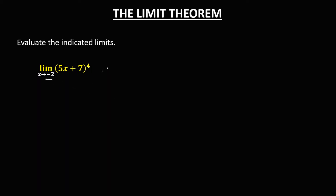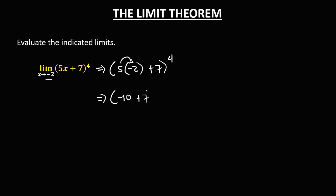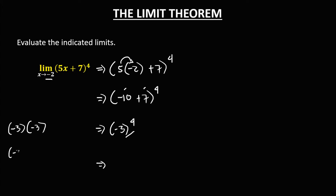For this given, as x approaches negative 2, using direct substitution, we have (5 times negative 2 plus 7) to the power 4. Simplifying: 5 times negative 2 is negative 10, plus 7 gives negative 3, to the power 4. Computing negative 3 to the fourth power: negative 3 times negative 3 is positive 9, and 9 times 9 is positive 81. So the limit is equal to 81.